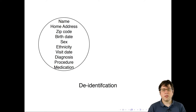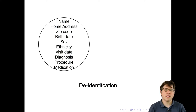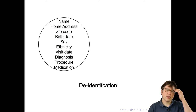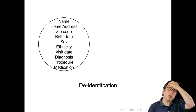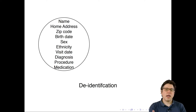I'll explain this through the research of Latanya Sweeney, who took data that researchers thought was anonymous and showed how to re-identify it. The data was held by the state of Massachusetts — medical records about procedures and insurance data. The data included name, home address, zip code, birth date, sex, ethnicity, visit date, diagnosis, procedure, and medication.